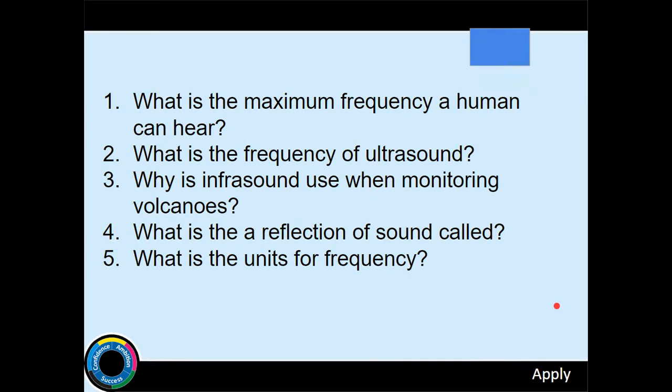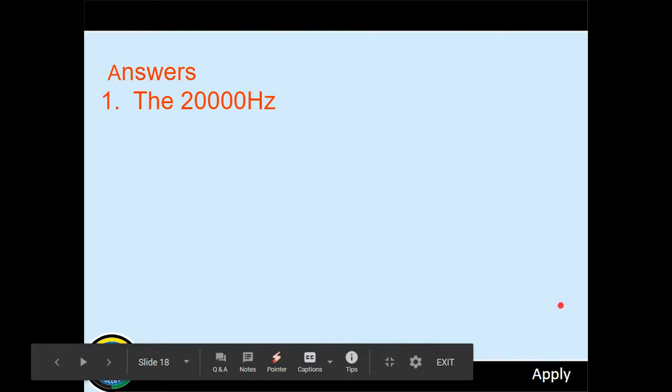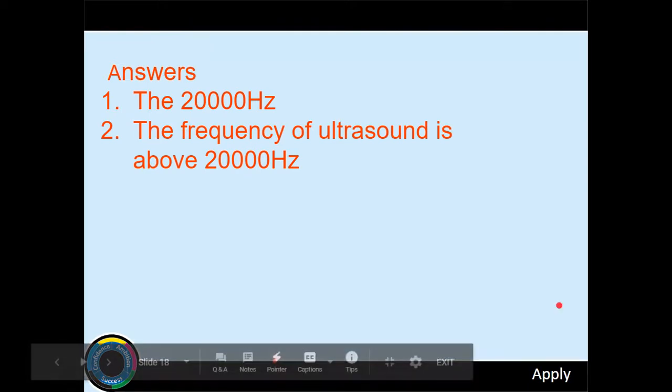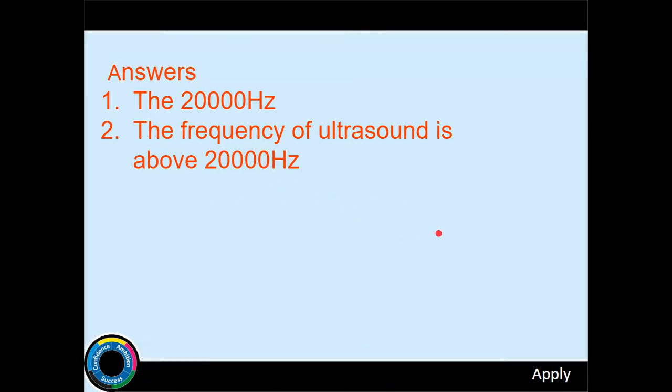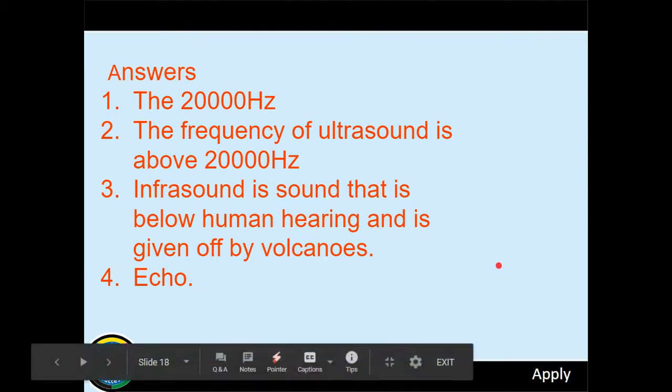You may want to stop the video at this point and complete these questions. Here are the answers. Number one, 20,000 Hertz is the maximum hearing level of humans. But I have said that some very few people can hear higher than that. The frequency of ultrasound is, as we said earlier, 20,000 Hertz. This can also be represented as 20 kilohertz or 20 K Hertz. Number three, infrasound is sound that is below human hearing and is given off by volcanoes. Number four, a sound that is reflected is known as an echo. And number five, the unit of frequency is the Hertz.